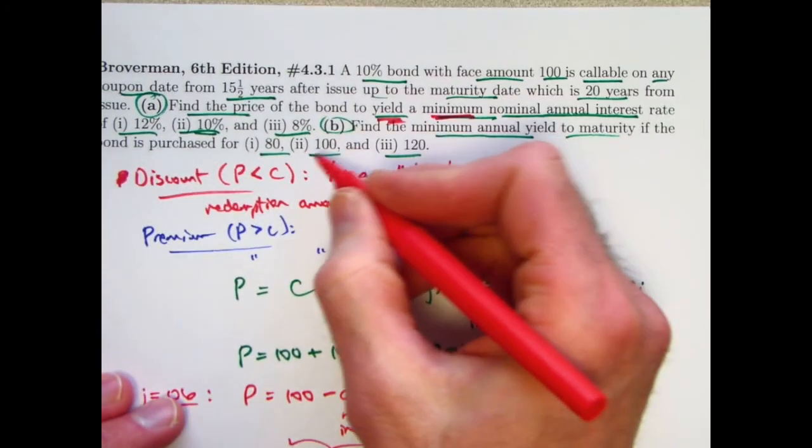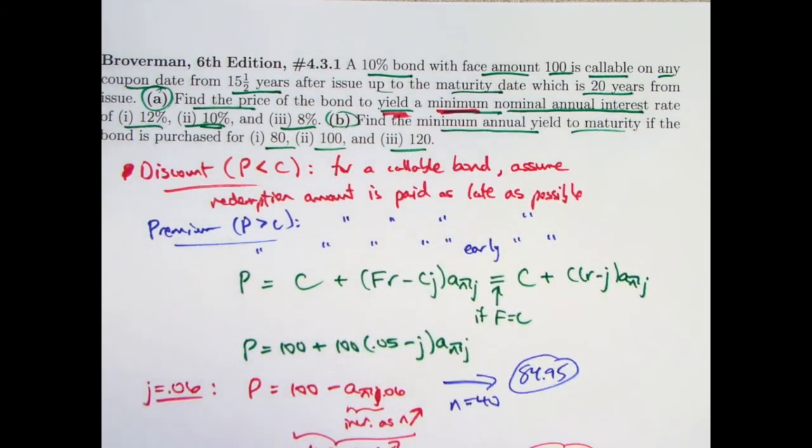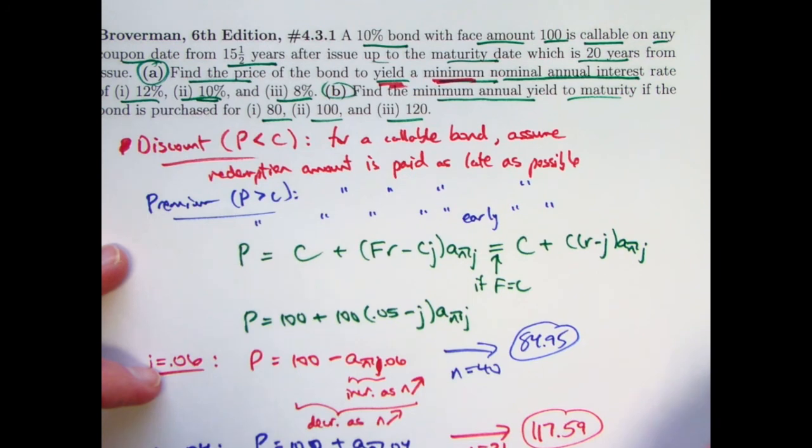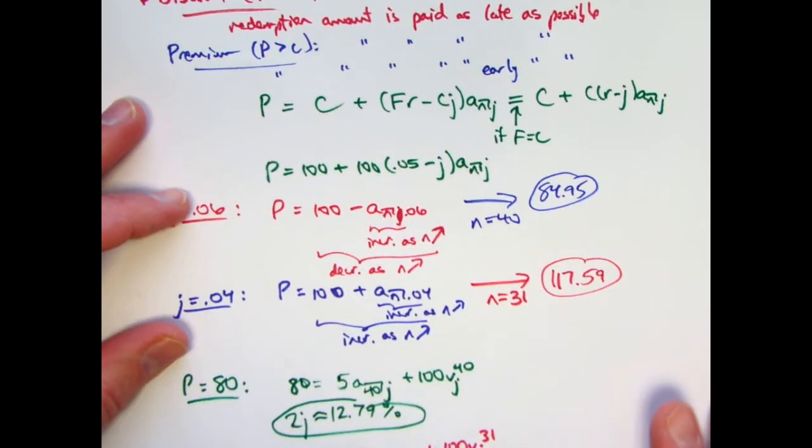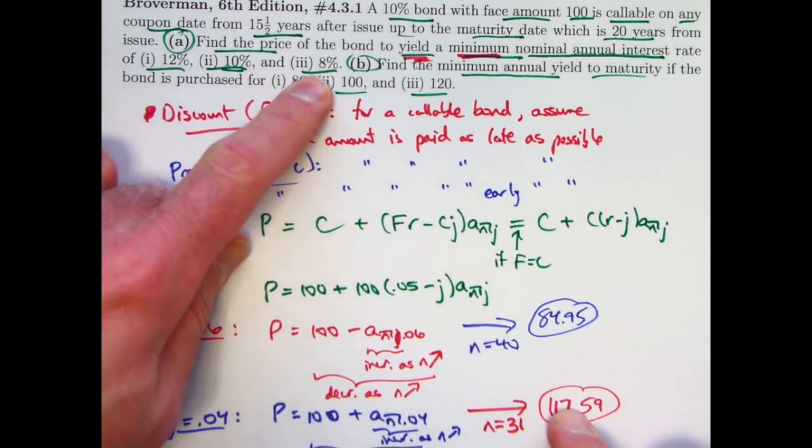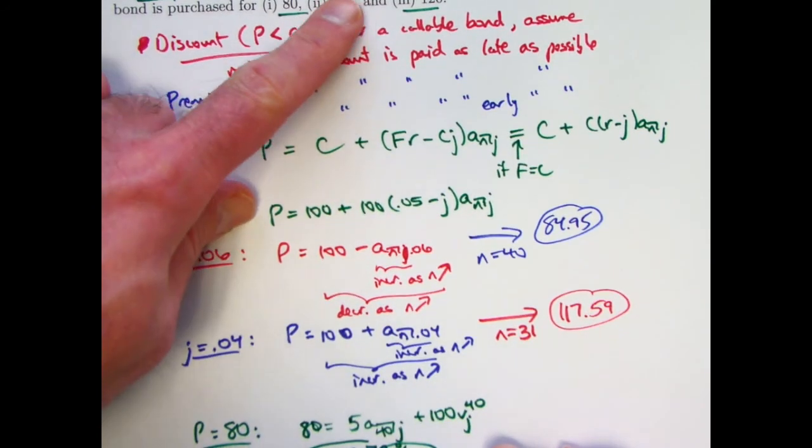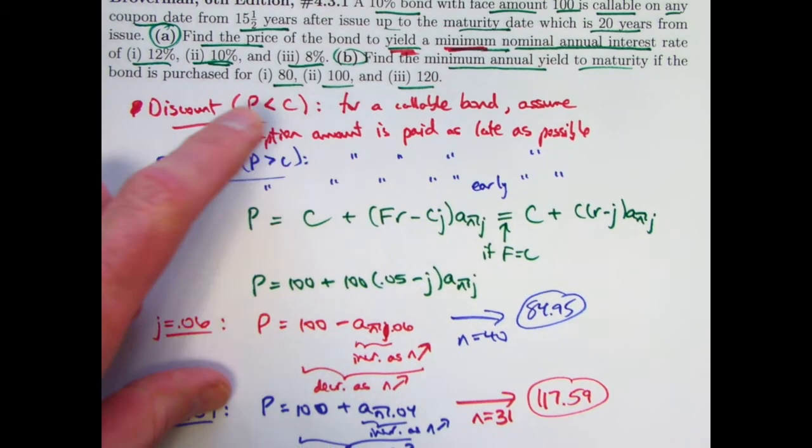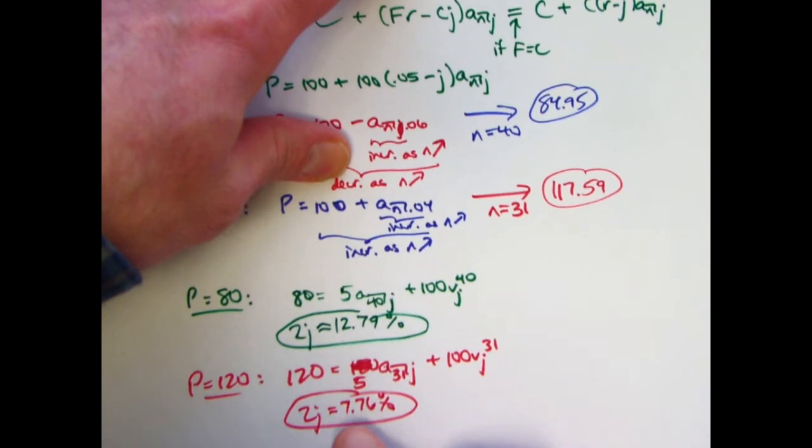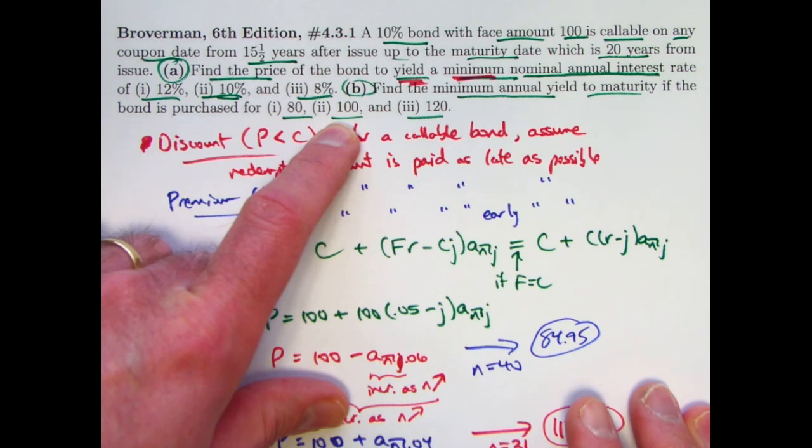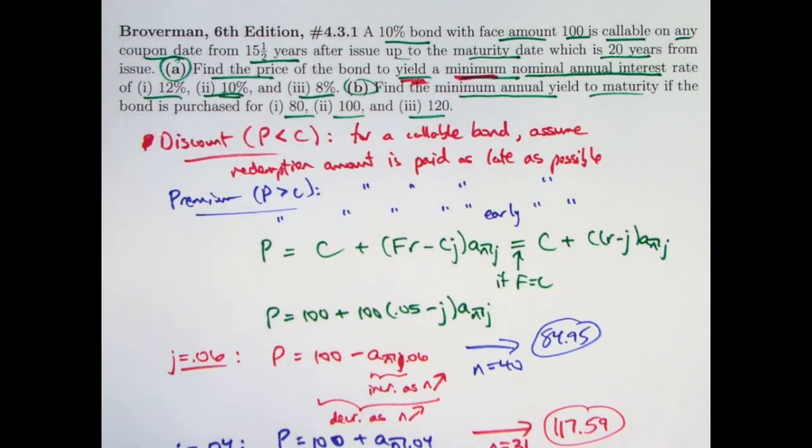And the middle case here, where the price is 100, the yield rate as a nominal annual yield rate would be the same as the annual coupon rate, 10%. So again, answers, 84.95 for A1, 100 for A2, and 117.59 for A3. For part B, part 1 is 12.79%, we're after a minimum annual yield to maturity. For part 3, 120 is the price. Answer is 7.76%. And for part 2, when the bond is purchased for 100, the answer is going to be 10%, the same as the coupon rate.